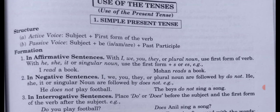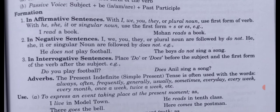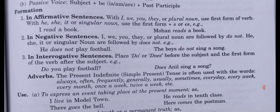The structure in active voice: subject plus first form of the verb. In passive voice: subject plus is/am/are plus past participle — the third form of the verb. The first form of the verb varies according to the singularity or plurality of the subject. Now let's look at the formation and examples of present indefinite tense.